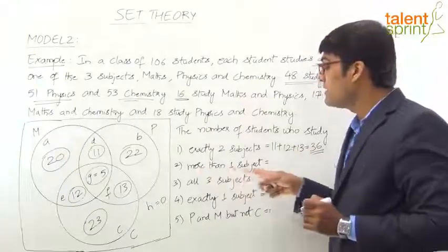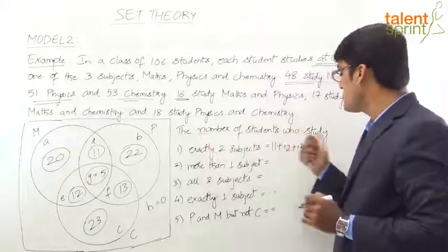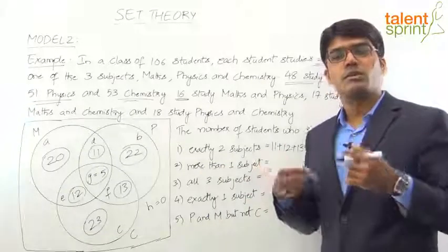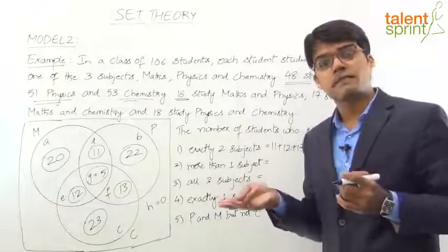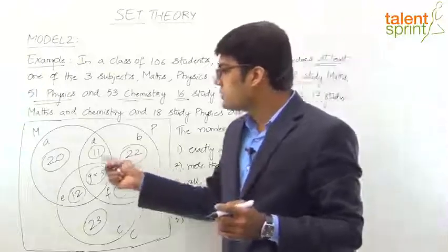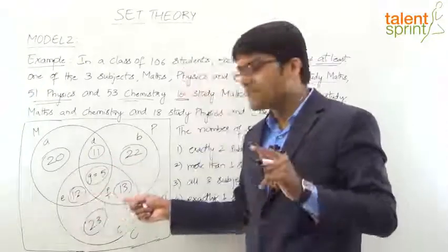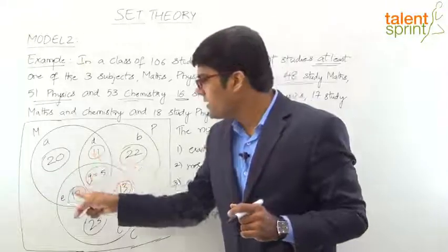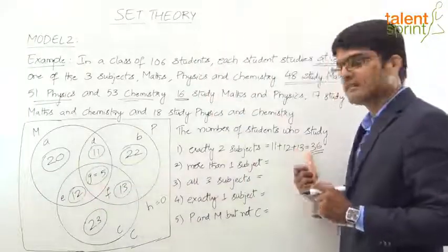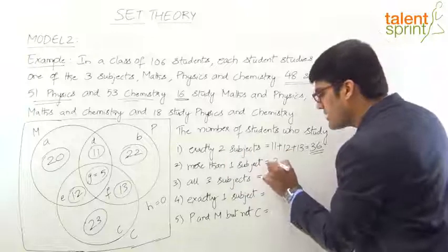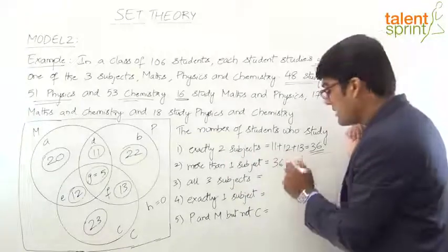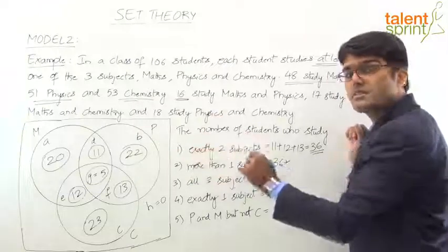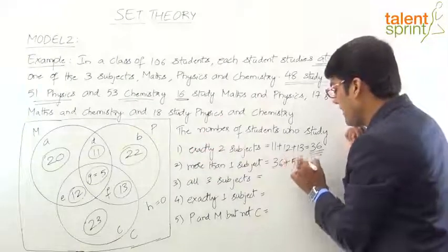Second question: the number of students who study more than one subject. More than one means two or more subjects. Two subjects: D + E + F = 36. Three subjects: G = 5. So more than one = 36 + 5 = 41.